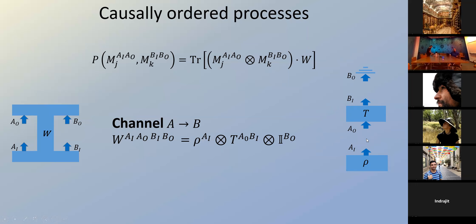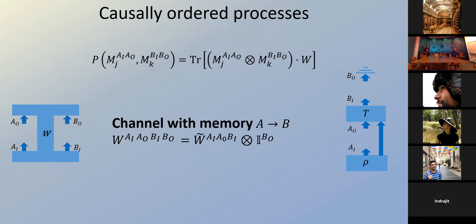What if you have two causally related events? For example, there is a channel from Alice to Bob: some initial state enters Alice, Alice performs an operation, and a channel connects Alice's output to Bob's input. This is represented by a process matrix that has the input state for Alice, an operator connecting Alice's output to Bob's input, and then the identity on Bob's output. The identity on Bob's output tells you that the system is discarded after that measurement — this is how the formalism represents an event that has no further causal influence.